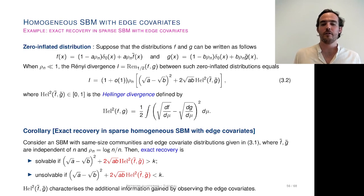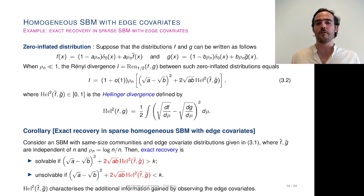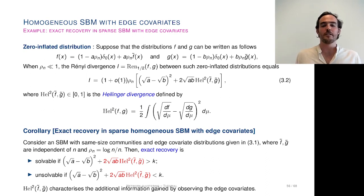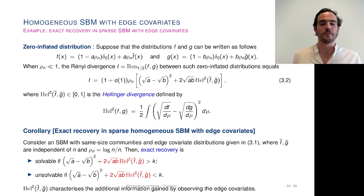For exact recovery in this sparse weighted SBM, the condition becomes: (√a − √b)² + 2√(ab)*H²(f-tilde, g-tilde) > k. The additional term highlighted in red, the squared Hellinger divergence between f-tilde and g-tilde, quantifies the information gained by observing edge weights. When f-tilde equals g-tilde the Hellinger term is zero, meaning edge weights carry no information about cluster membership and can be discarded. As soon as f-tilde ≠ g-tilde, discarding edge weights loses information proportional to this Hellinger divergence.